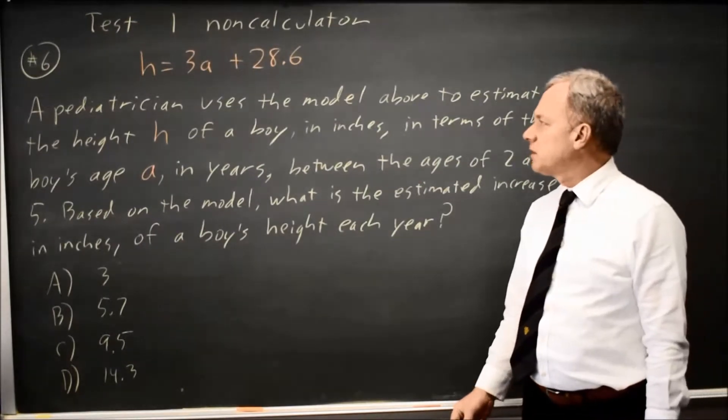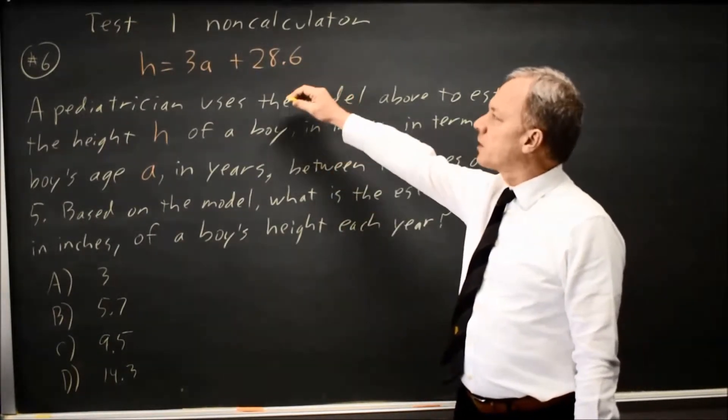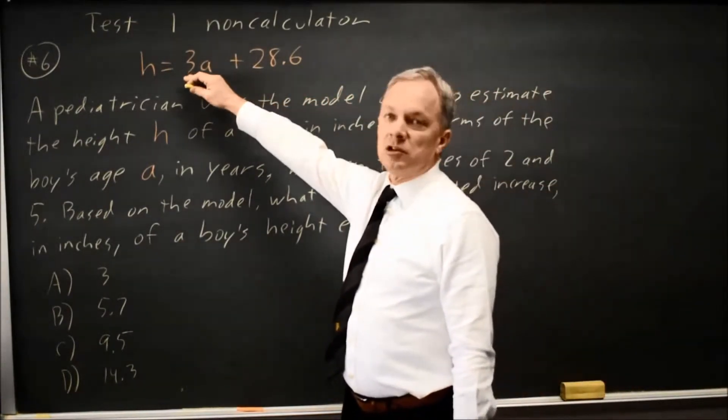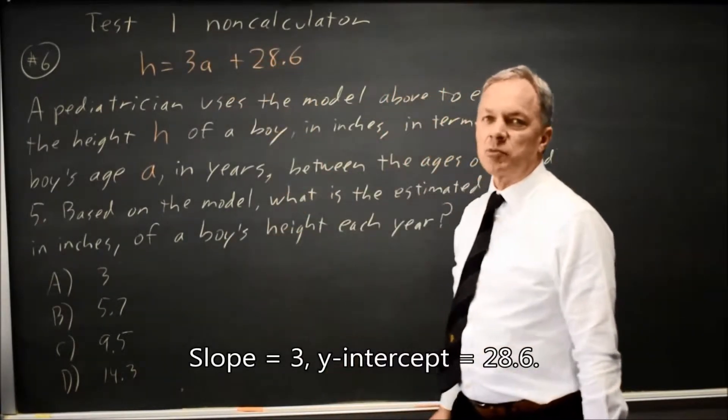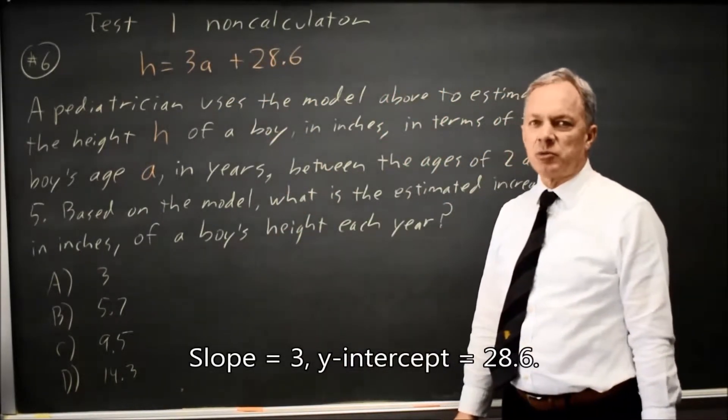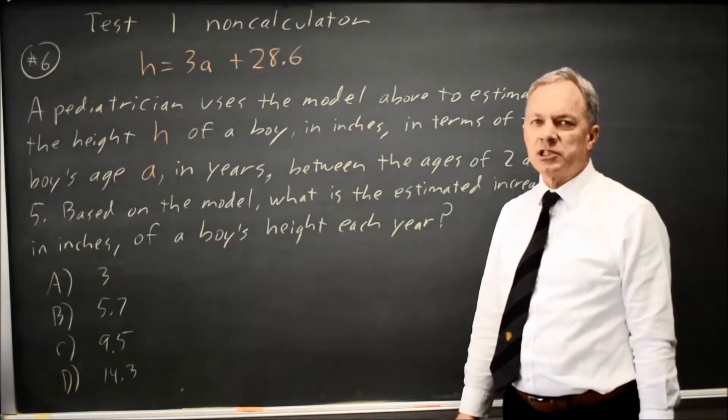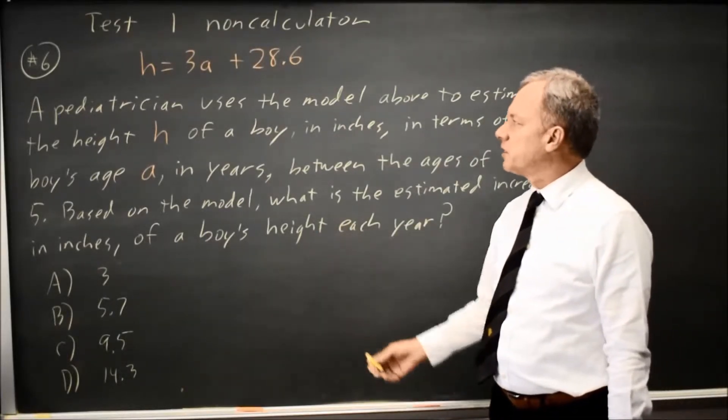Looking at the equation, this is linear, and we have a slope and an intercept. College Board will often ask about either the slope or the intercept. You can't predict which in advance. It depends on the words of the question.